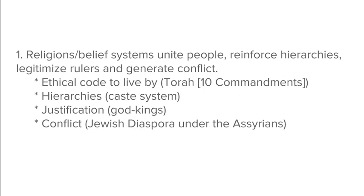To unify people, you give them a code to live by — seen in the Ten Commandments of the Jewish and Christian faiths. Reinforcing hierarchies is seen in the caste system, which is what Hinduism does. Justification of rulers includes those who are claimed to be divine kings or divinely chosen, like Confucianism and the mandate of heaven in China, or Zoroastrianism. And we also see conflict, like the Jewish Diaspora, when the Jews were forced away from their homeland by the Assyrians and later by the Romans, and their city of Jerusalem and temples there were destroyed.